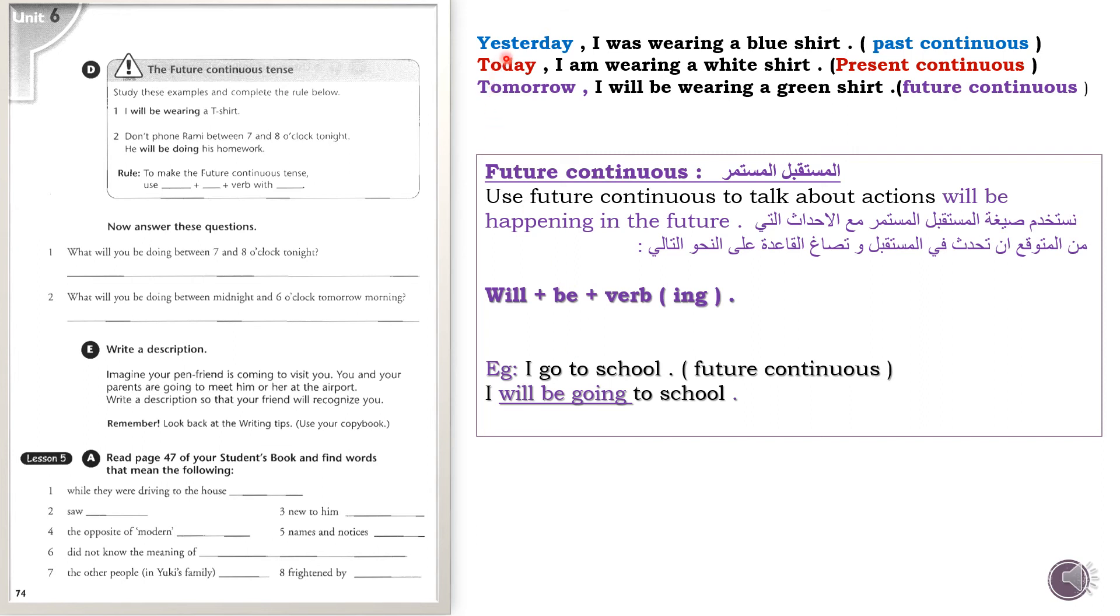Let's distinguish between the tenses. Yesterday - we talk about past continuous. Yesterday I was wearing a blue shirt. Notice the past continuous tense: 'was' plus verb with '-ing'. I was wearing a blue shirt. I expressed the past continuous using 'was' and the verb containing '-ing'. Today - I am wearing a white shirt. Today I am wearing. This is present continuous: 'am' plus verb with '-ing'. While in the future, tomorrow I will be wearing a green shirt. Future continuous.